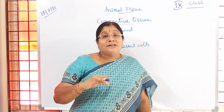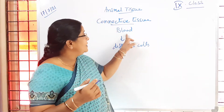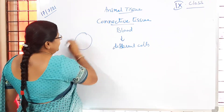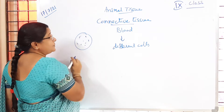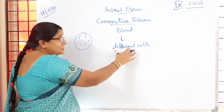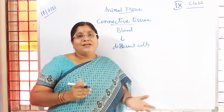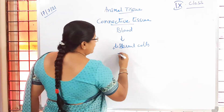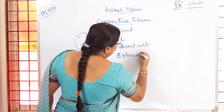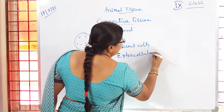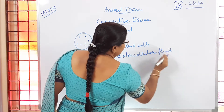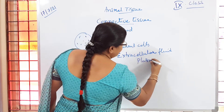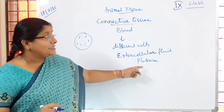Apart from that, in blood there is an extracellular fluid present. Extracellular fluid means fluid present outside the cell, whereas intracellular fluid means fluid inside the cell. The different blood cells are present in this extracellular fluid. The extracellular fluid present in the blood is called plasma.